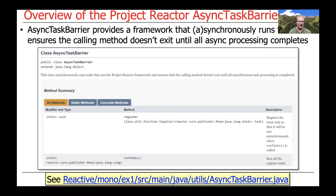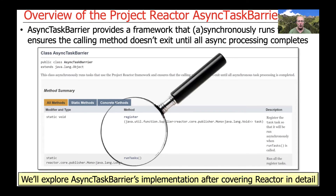You can take a look at the AsyncTaskBarrier class for Project Reactor in pretty much any of the case study directories, and we'll walk through the implementation of this class in much greater detail later in the course. First, I want to cover the key methods that are part of Project Reactor's mono and flux classes, so that you can actually make sense out of the implementation of the AsyncTaskBarrier.